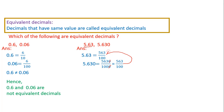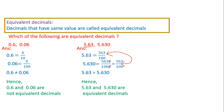Both the fractions have the same value — both are equivalent fractions. Hence 5.63 is equal to 5.630, so 5.63 and 5.630 are equivalent decimals.